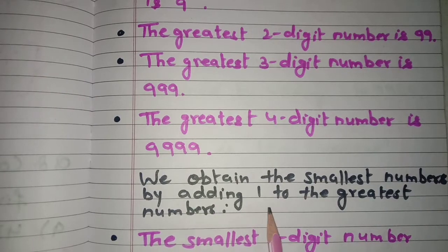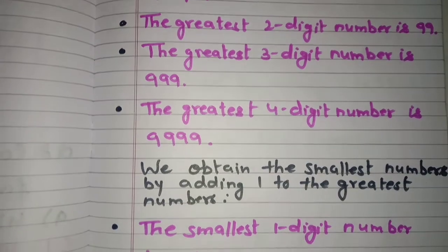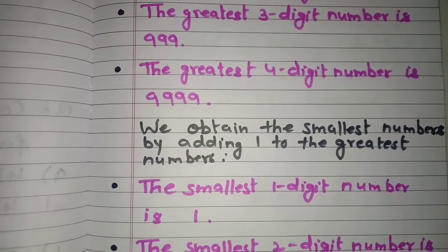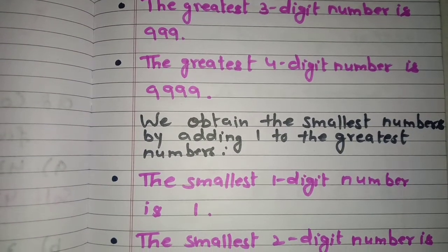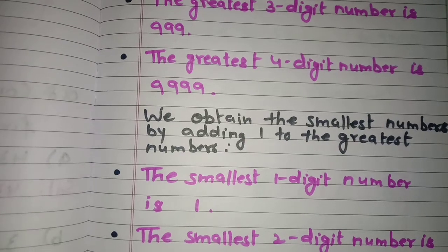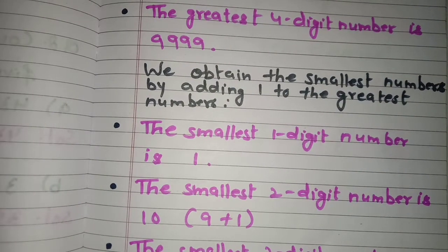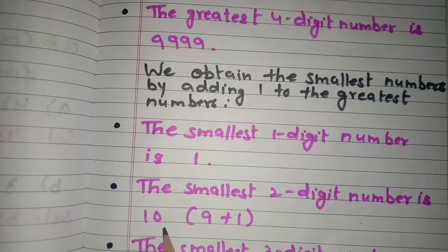Now we obtain the smallest numbers by adding one to the greatest numbers. How? Let's see. The smallest one digit number is one. The smallest two digit number — the greatest one digit number is nine, and when we add one to it we will get 10.